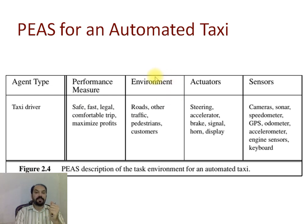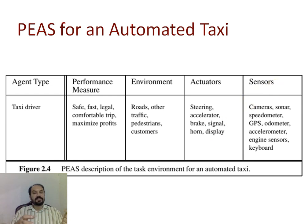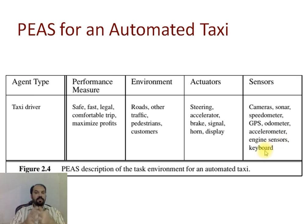The agent will operate in an environment such as roads, other traffic, pedestrians, and customers. The agent's actuators include steering, accelerator, brake, signal, horn, and display. The sensors which perceive the taxi driver's environment include cameras, sonar, speedometers, GPS, odometers, accelerometers, engine sensors, and various types of keyboards used to perceive and input data.